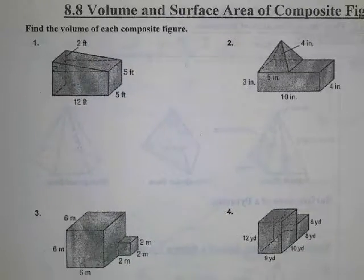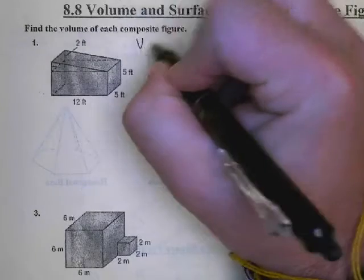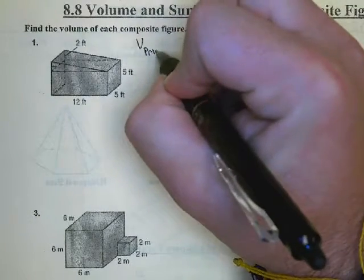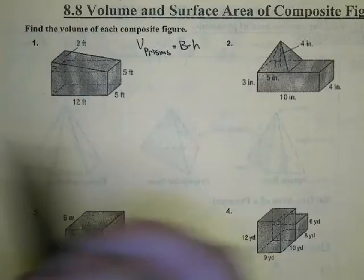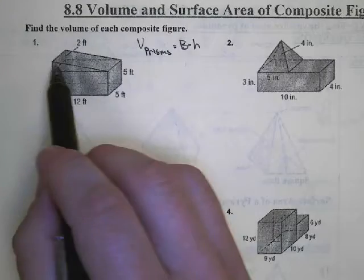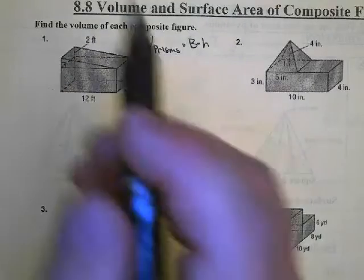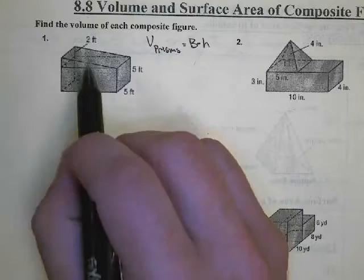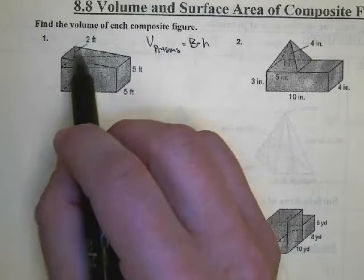Let's look at number one. To find the volume of our prisms, we take the base area and multiply it by the height. We have two prisms here: a rectangular prism and a triangular prism. Remember, the base area is that shape shared on both the top and bottom of the figure. Whenever we have ramps or triangular prisms, our base area is always going to be the triangle shape.